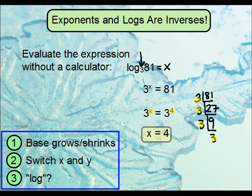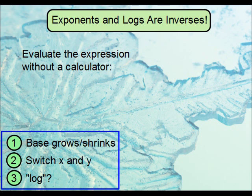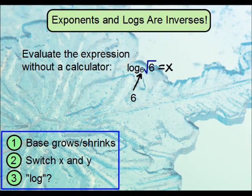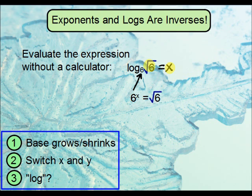Let's do one more — this time with a radical. Set the expression equal to x and write it in exponential form. Start with the base, which is 6. The base is growing. Then switch the two values: 6 will be raised to the power of x, and it will equal the square root of 6. Keep in mind that the square root of 6 is the same as 6 to the 1/2 power, which means x has to be 1/2.